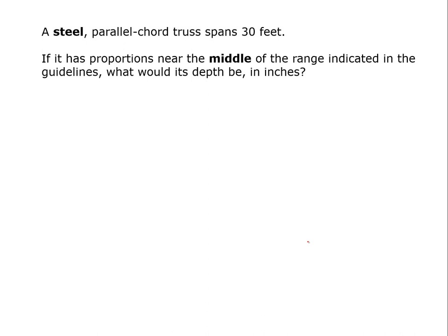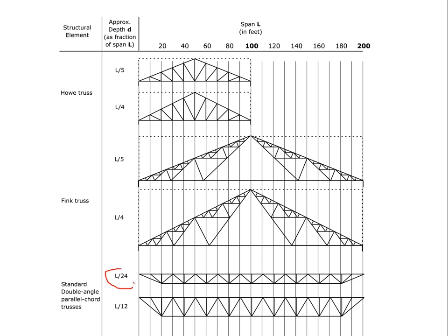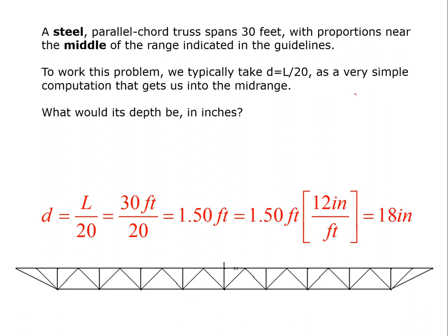So another question we sometimes ask is, what if it has proportions near the middle of the range? And we often pick a number that is easy to deal with. So if we look here, we say this is L over 24, this is L over 12. It's not exactly in the middle, but a proportion that we frequently pick is L over 20 because it's real easy to run the numbers. And that actually turns out to be a very commonly occurring depth is somewhere in the vicinity of that. So that's what we're going to do. We're just going to grab this proportion, which is really easy to run with. We'll say L over 20 is 30 feet over 20, which is 1.5 feet. And when we convert that, that's 18 inches. And this truss is drawn with those proportions that the length of the truss is 20 times its depth.